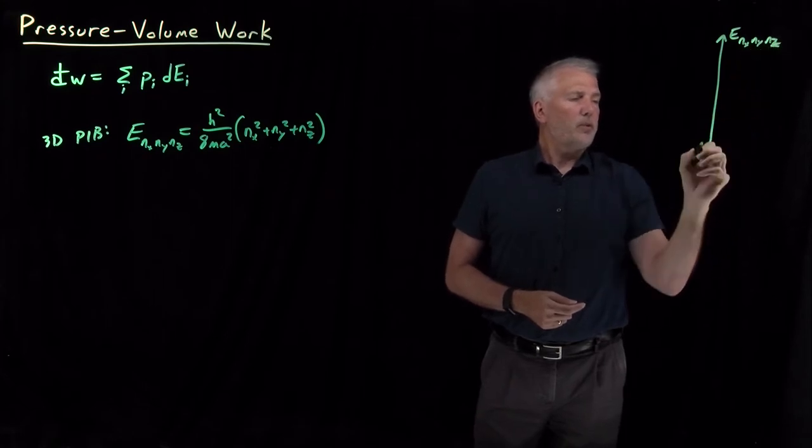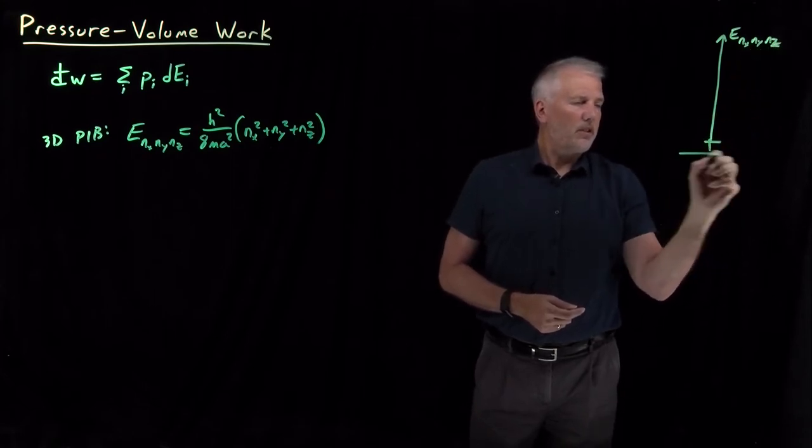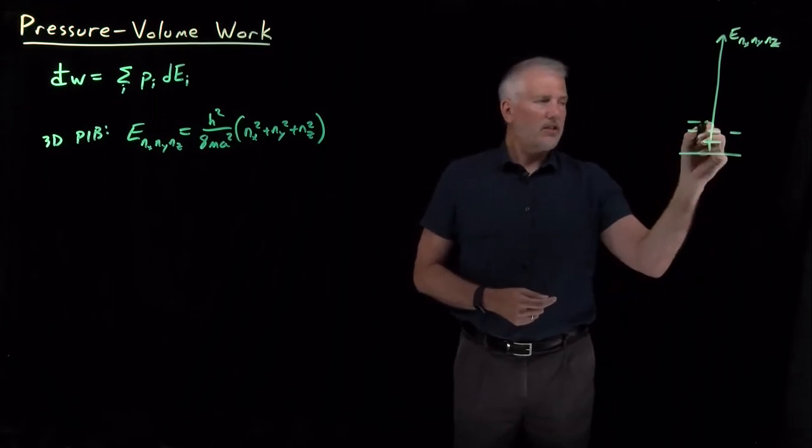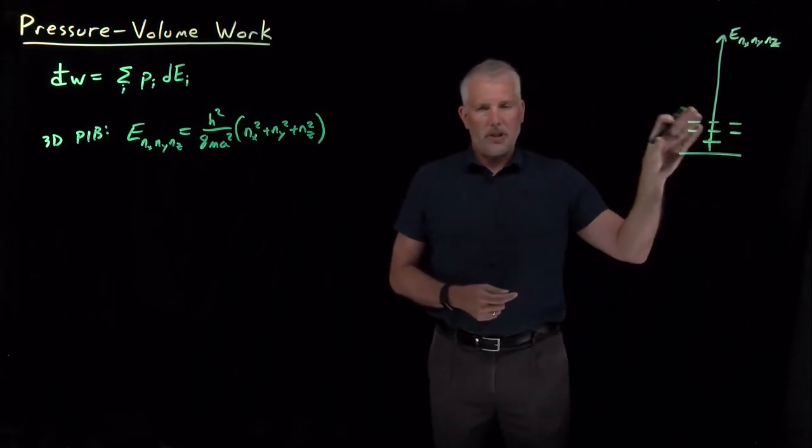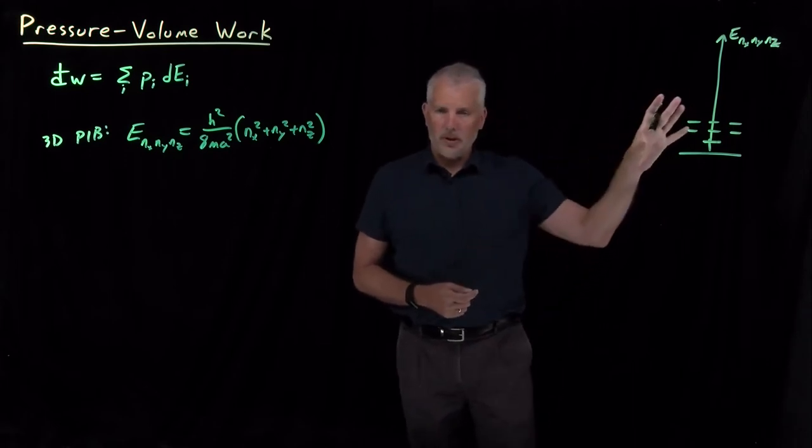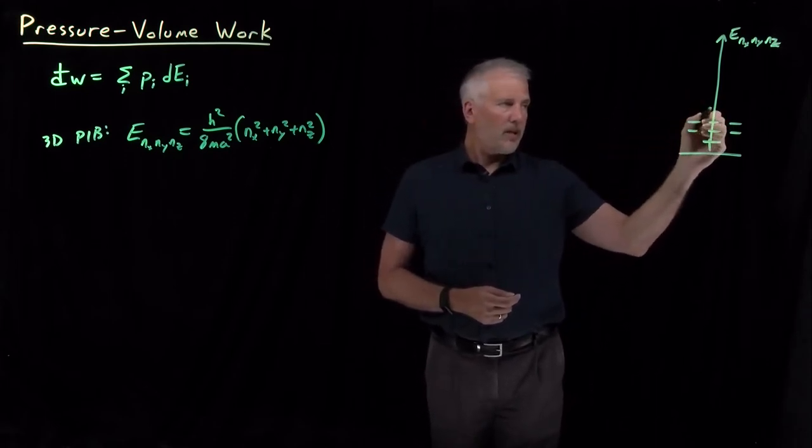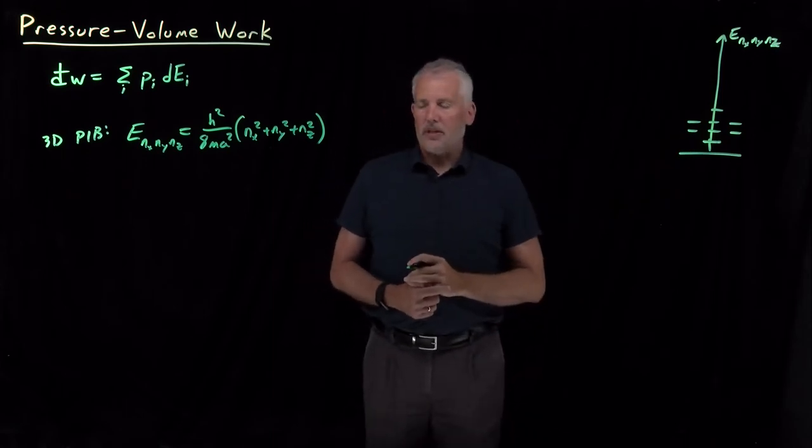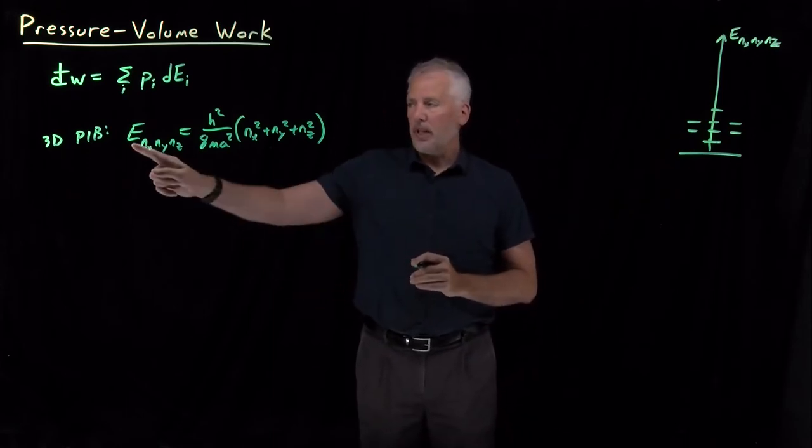Again, in a cubic box, as we've seen before, there's a ground state and there's a triply degenerate excited state. And there's a lot of other states that are either triply degenerate or not degenerate or six-fold degenerate and so on. So there's a whole ladder of energy levels for this 3D particle-in-a-box, particle-in-a-cubic box.